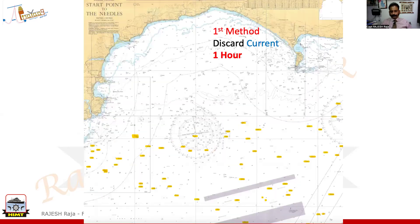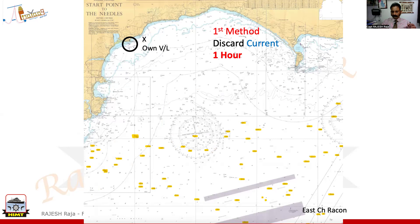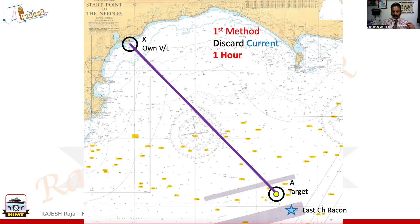Now let us go to the chart. Since I told you this whole question can be done on the chart, I am going to draw everything on the chart right now. Exmo pilot station is here — this is where my own vessel was. Target was given as a range and bearing from the East Channel Recon buoy. Range and bearing was given, so I plot the target position. My first step is to join the two lines — I call this the rendezvous line. When I measure it, I get 137 degrees, 45 nautical miles.